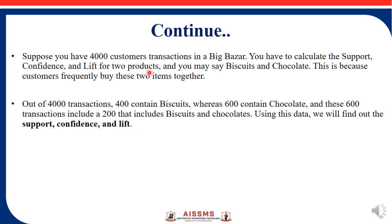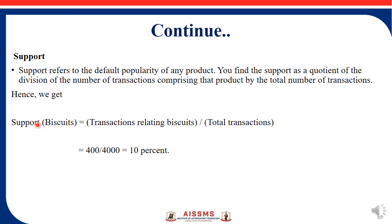The two products are biscuits and chocolates, because customers frequently buy these two items together. From 4000 total transactions, 400 contain biscuits, 600 contain chocolates, and 200 transactions include both biscuits and chocolates. We will now find out the support and confidence. Support for biscuits equals transactions related to biscuits divided by total transactions.